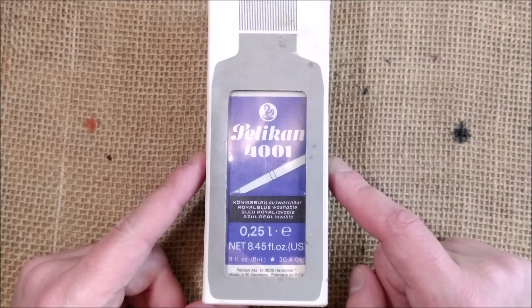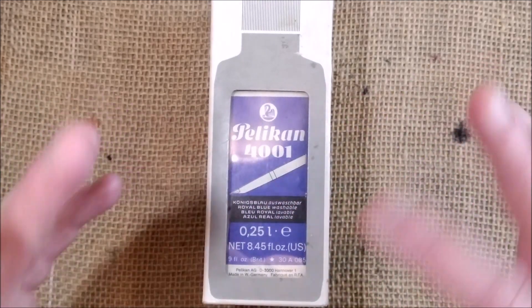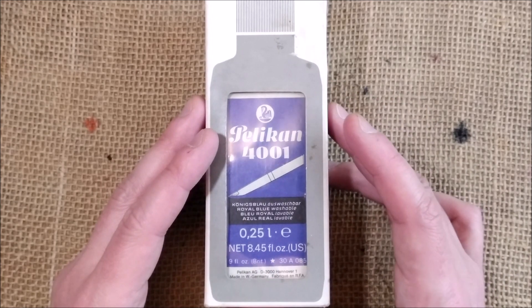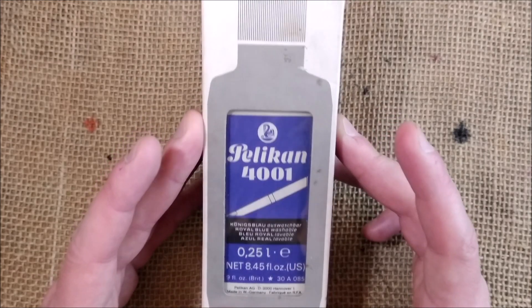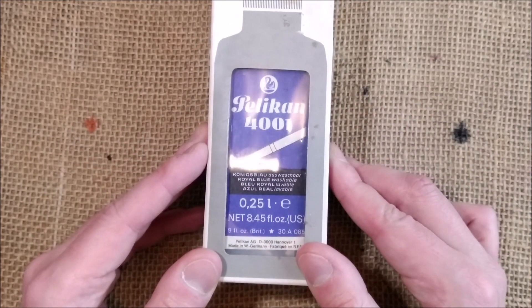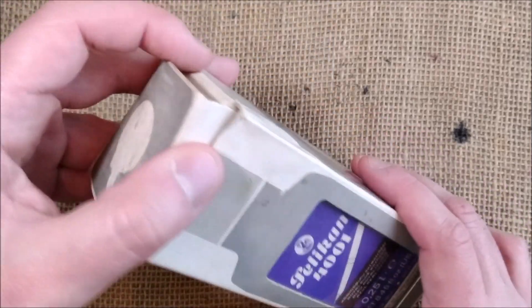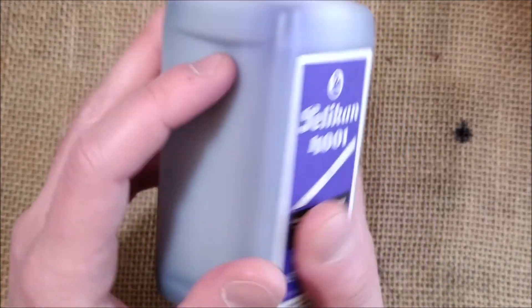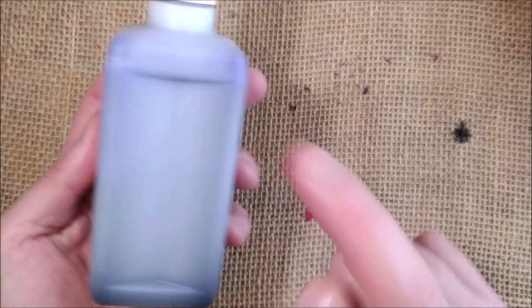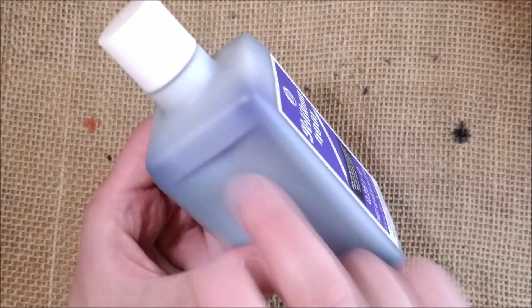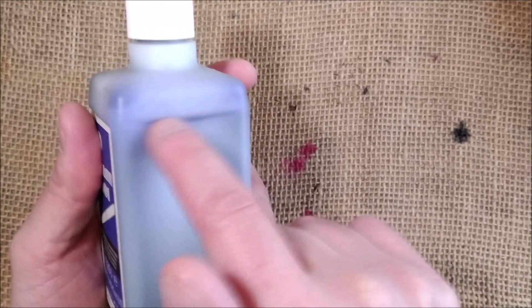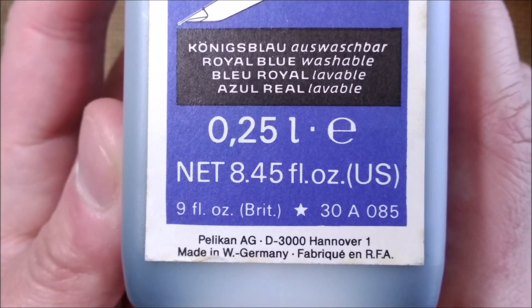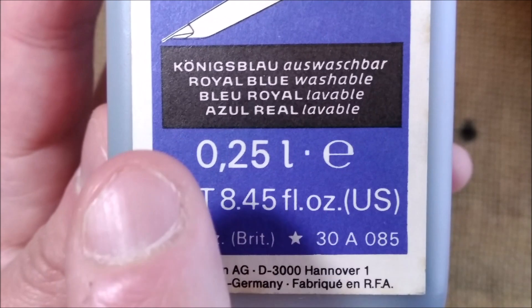I also went to a stationary store, an old one, where I bought some stuff that I already showed you here, such as some Lamy CP1 pens. And I went there and it had this Pelican bottle, which is interesting because it is a nice big bottle. It is very full and it is a bottle of Königsblau, or royal blue, or bleu royal.